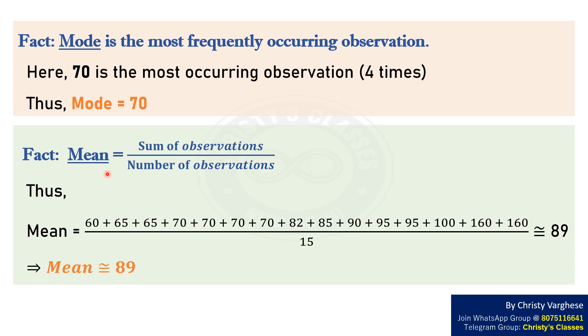Finally, let us find mean, which equals sum of observations by number of observations. Here, mean equals sum of the given 15 observations by 15. This is approximately equal to 89. This implies that mean is approximately 89.